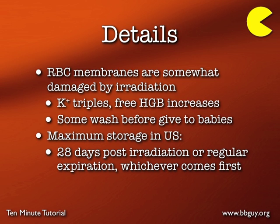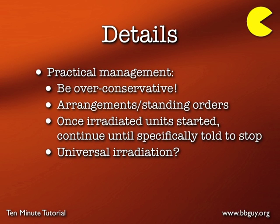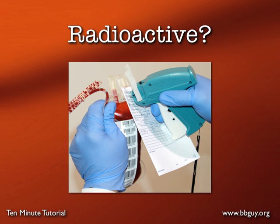Red cell membranes are somewhat damaged by irradiation — potassium rises dramatically and free hemoglobin less so — so some centers wash irradiated blood products before giving them to babies. The maximum storage for products after irradiation is 28 days in the United States or the regular expiration date, whichever comes first. You should have a very clear process to ensure that patients who need irradiated blood actually receive it. Some have taken this concern to mean that universal irradiation is necessary. Nurses and patients often ask about this.